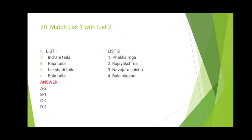The 70th question is to match formulations used in Kaumarabrittiya with diseases. List 1 has Indrani Thaila, used in Raja Yakshma — connect Indra with Indra Raja. Then Raja Thaila, used in Phakka — all formulations used in Phakka are three-star important. Then Lakshadi Thaila, used in Balashosha — connect Laksha with Shosha. Finally, Baladaila is used in Navajata Shishu Paricharya to remove Prasuti Kleshitam.